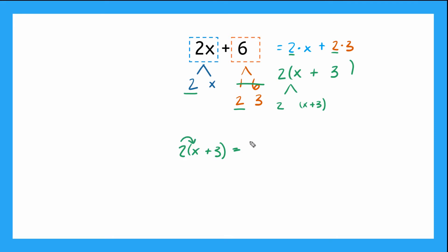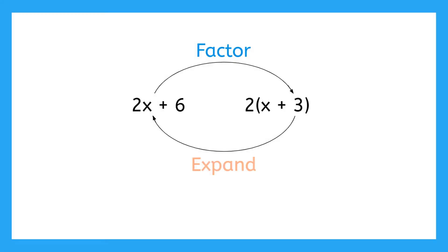So I'd multiply 2 times x and that will give me 2x. And then I'm going to multiply 2 times 3 and that will give me 6. And check it out. Same expression. So that means we factored it correctly. This shows us that factoring is the opposite of expanding or using the distributive property.